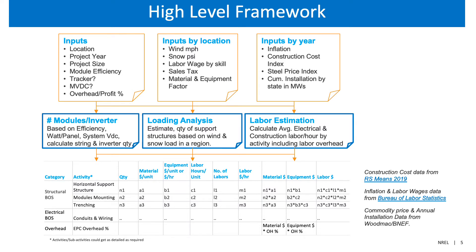We use Bureau of Labor Statistics data for the labor wages for all these activities. For commodity prices and soft costs, we usually depend on quarterly reports from third-party research firms like Wood Mackenzie or Bloomberg, and sometimes we also get data from industry interviews.